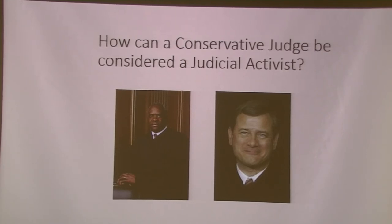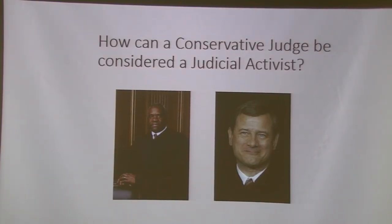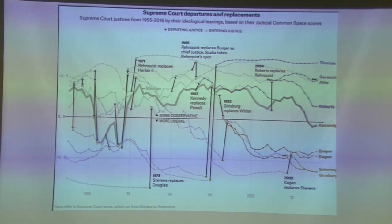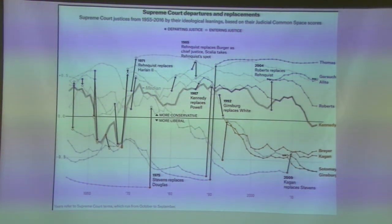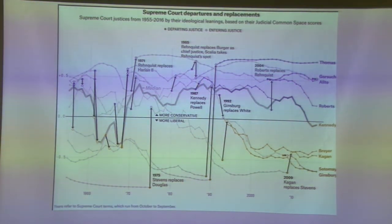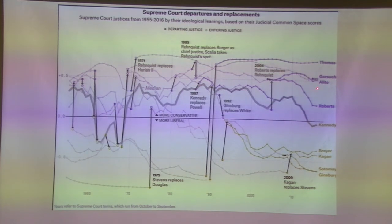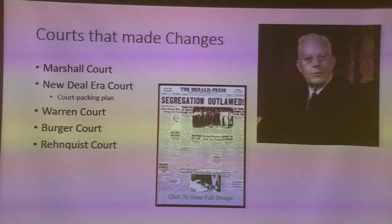A lot of times people call activist judges liberal, but how can a conservative judge be considered activist? Right now, one of our most activist judges ever has been Clarence Thomas, who is conservative — if you overturn what state legislators or Congress passed, you are an activist because you're using that as a check. This chart shows replacements and the liberal-to-conservative divide over time. Since Ginsburg was replaced, the court shifted significantly in a more conservative direction.